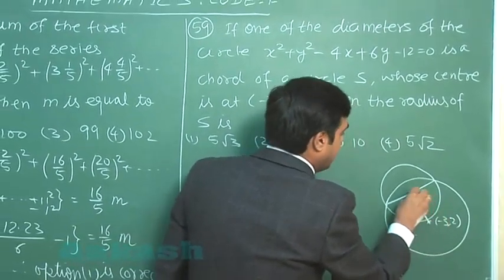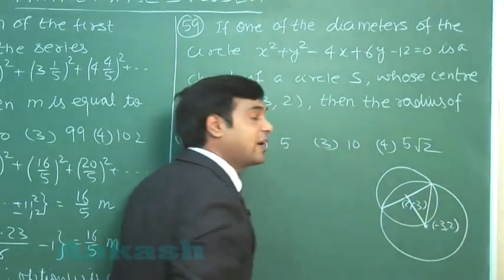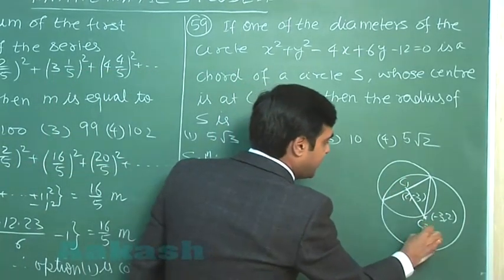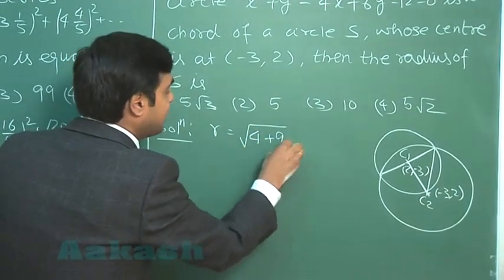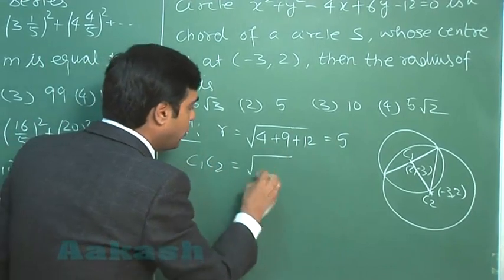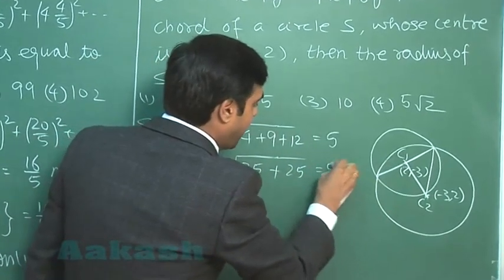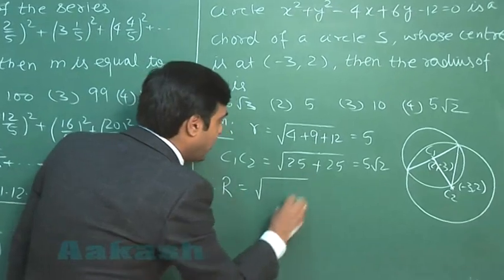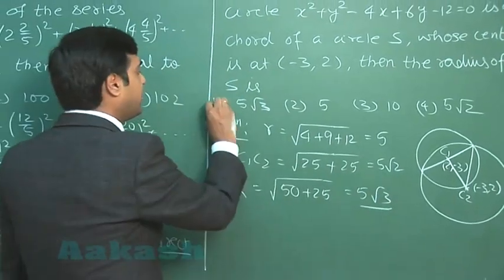So we can find this distance between the two centers. We have the radius of the given circle that will give us the radius of the required circle. So just simplify this part. Let us say this center be C1, this be C2. Radius of the given circle, this is simply square root of 4+9+12, that is 5. Distance between the centers, this is square root of (2+3)², 5² that is 25+25, that is 5√2. So the radius of the required circle, say capital R, this can be obtained square root of 50+25, that is 5√3. So from the given options, option 1 is correct.